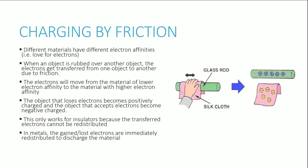The object that loses electrons becomes positively charged, because if a neutral material loses electrons there are more positives than negatives overall. The object that gains electrons becomes negatively charged, because there are now more negatives than positives. One key aspect is that charging by friction only works for insulators. Conductors have free-flowing electrons throughout the structure, so when electrons are transferred to a conductor, they get redistributed immediately and the object basically discharges. Insulators, however, cannot redistribute electrons, so the transferred charge remains localised.